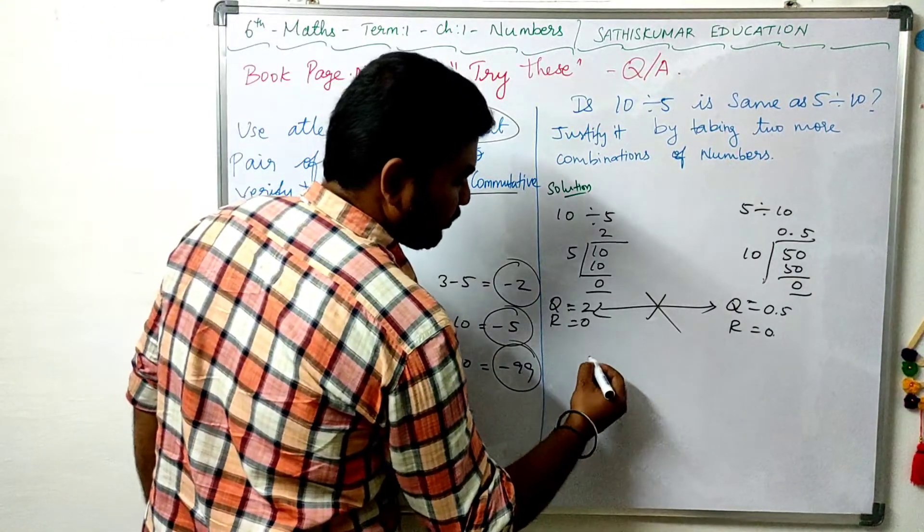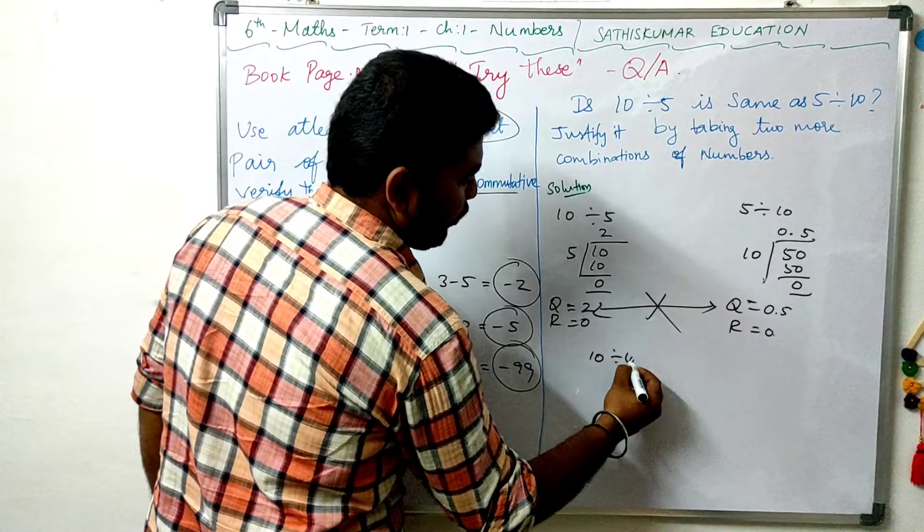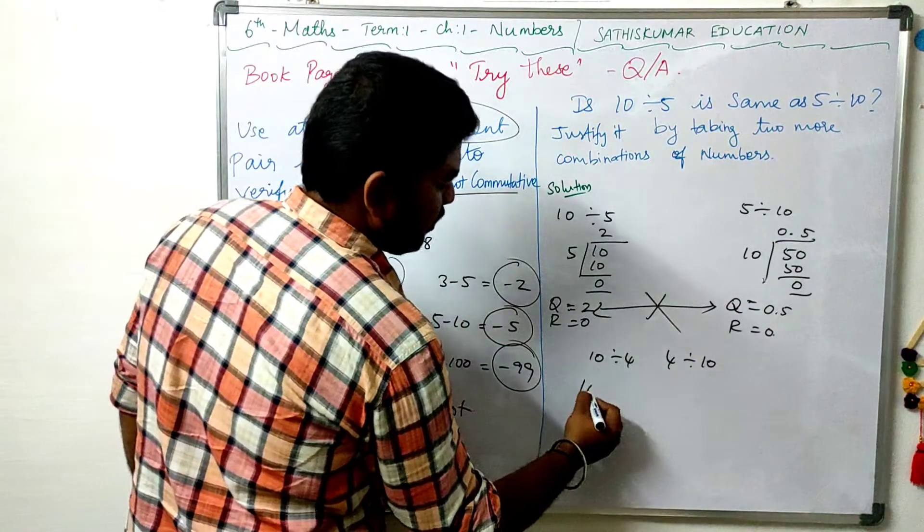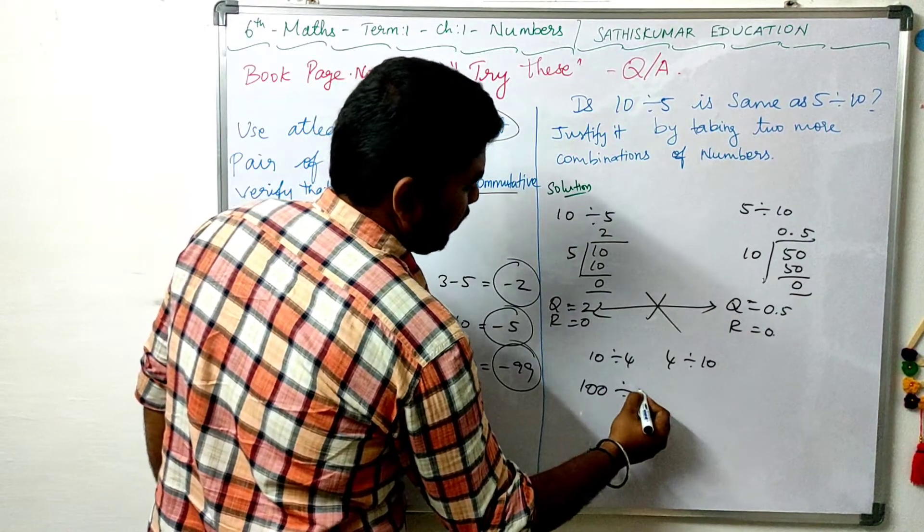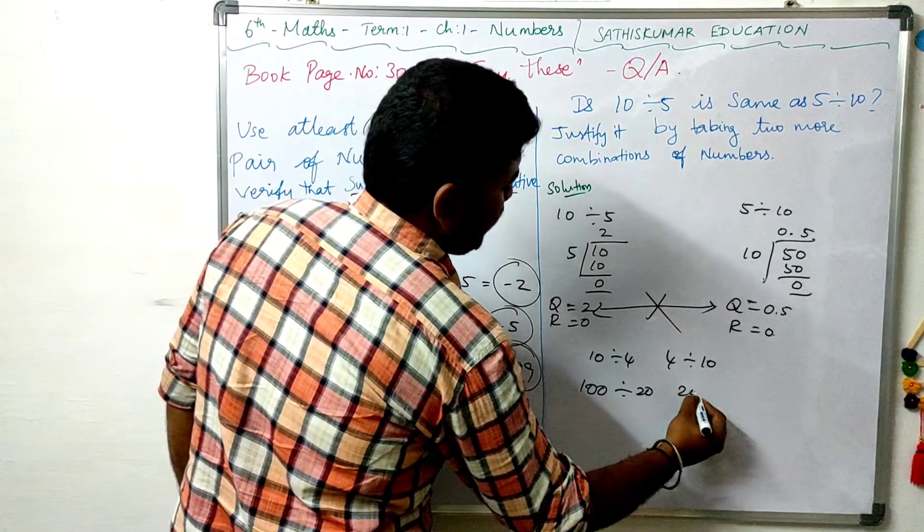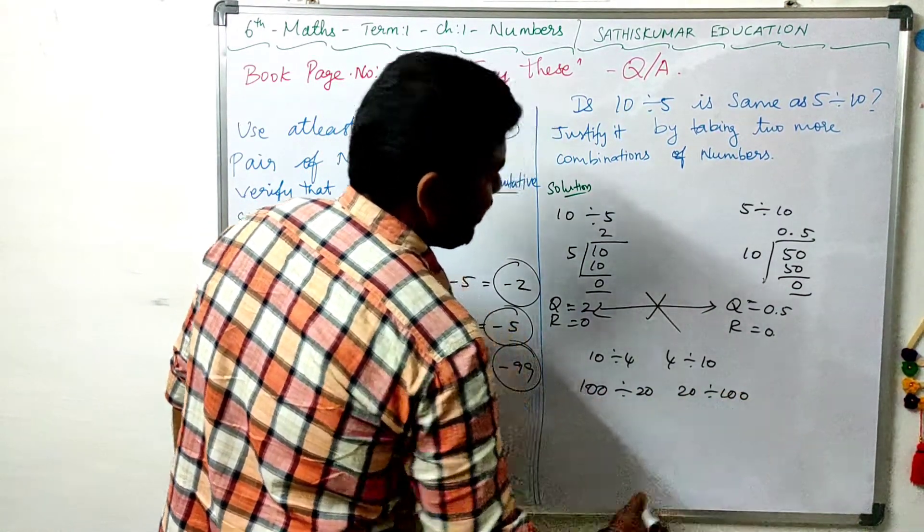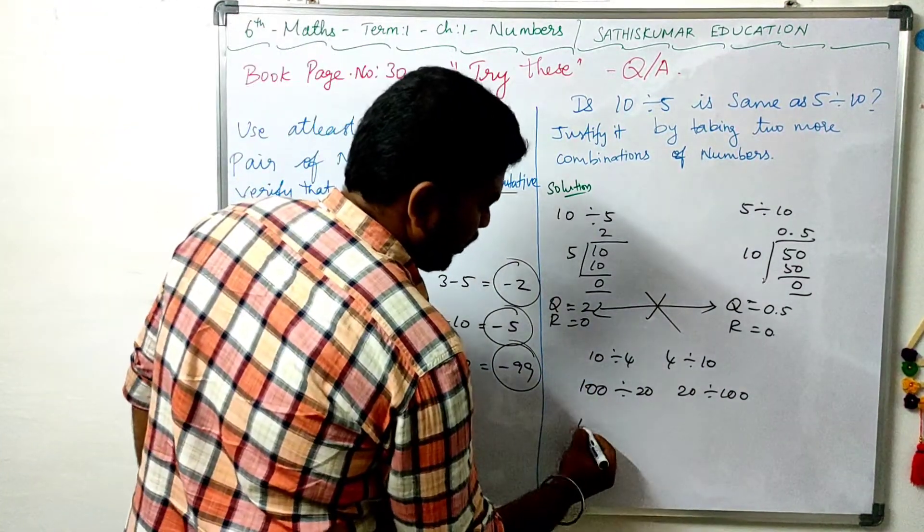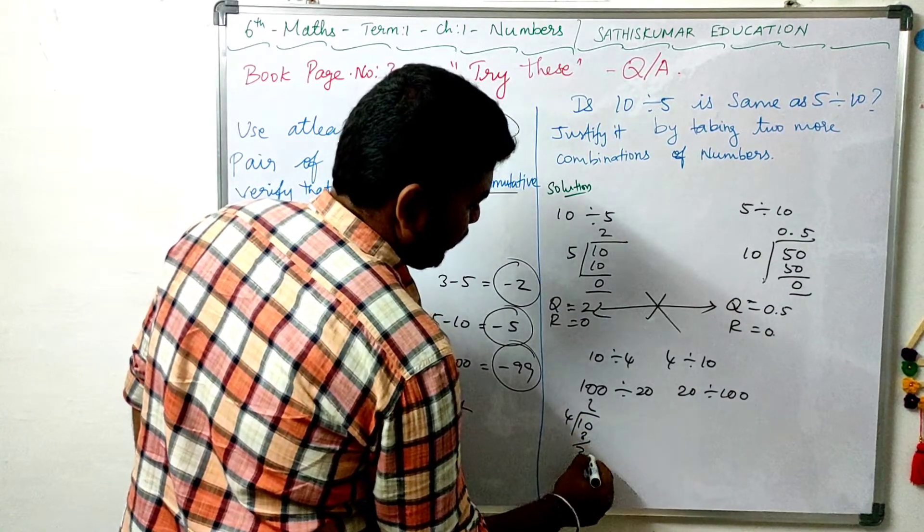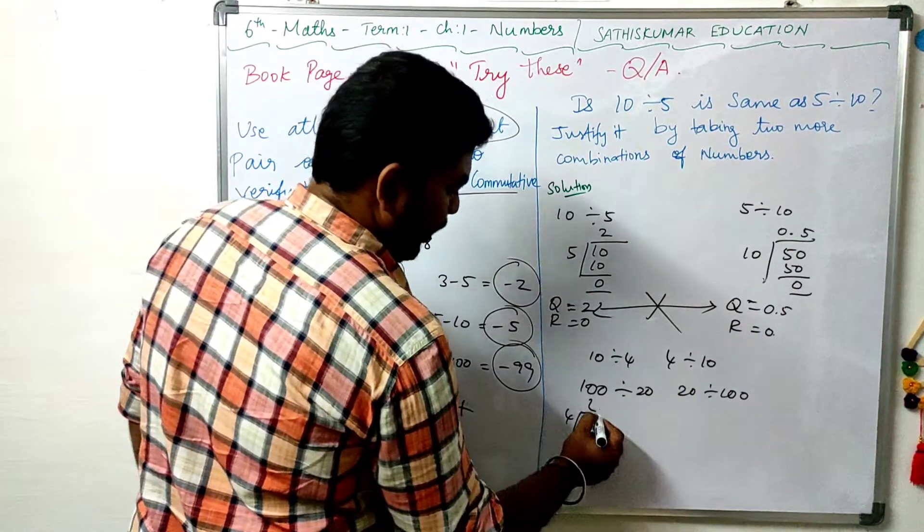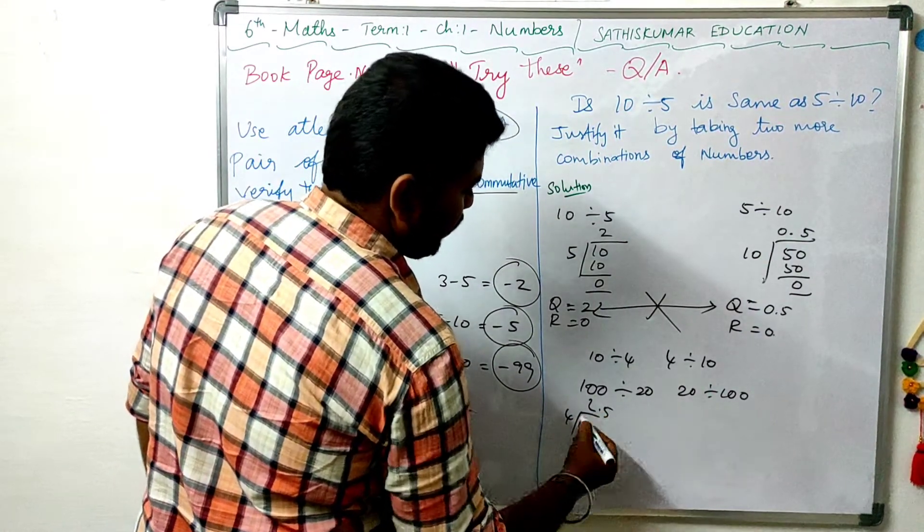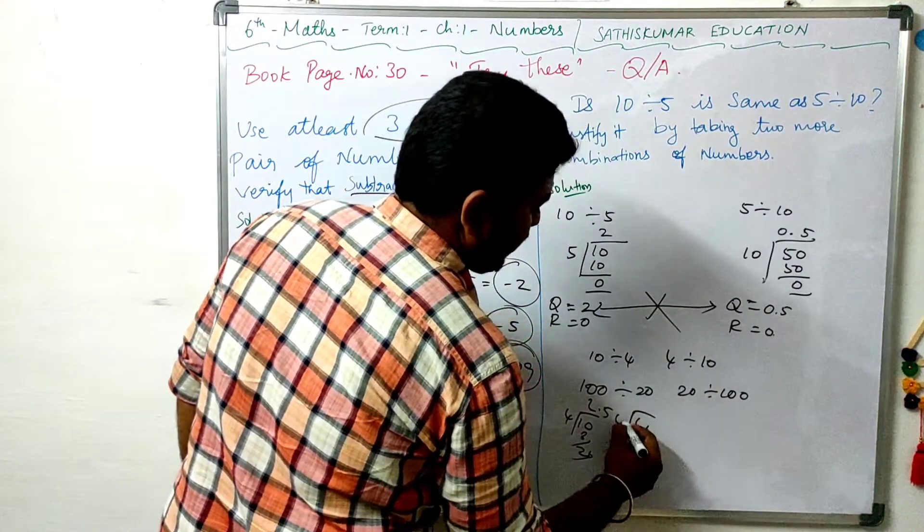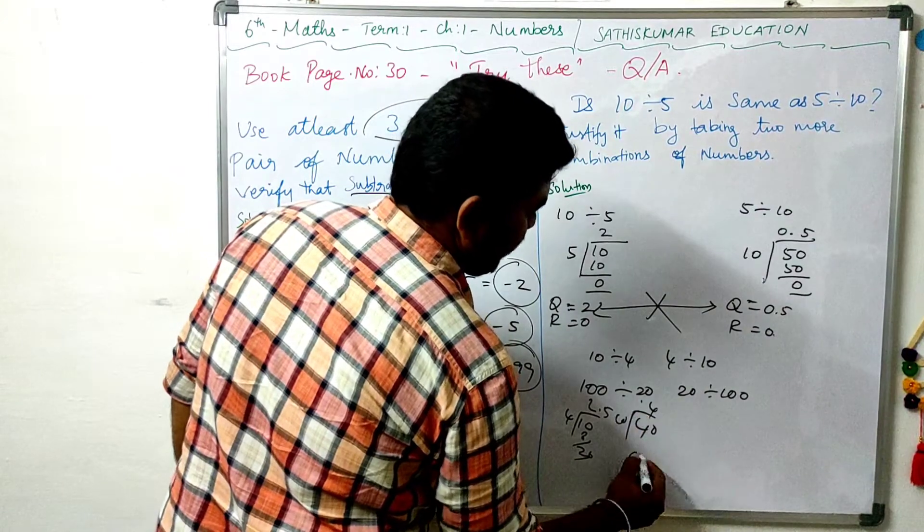If you add 2 examples, simply add 10 divided by 4, 4 divided by 10. If you add 100 divided by 20, 20 divided by 100. 10 divided by 4 is 2, remainder 2. 4 divided by 10 is 0.4. So 0.4 and 2.5 is not the same.